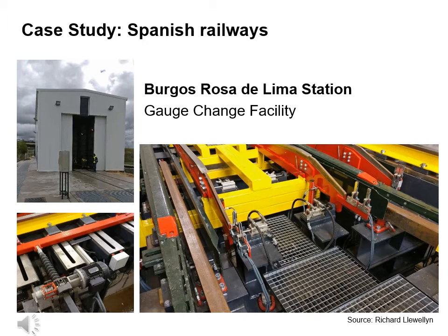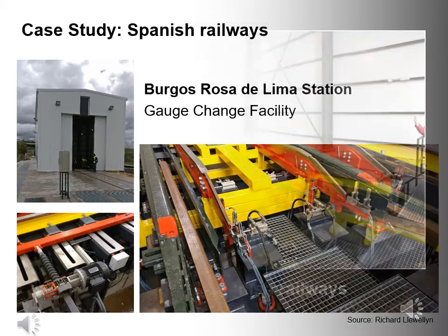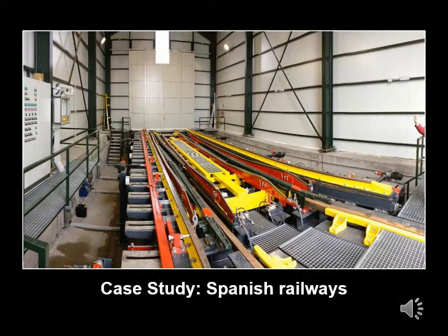At the Burgos Rosa de Lima station, they have a gauge change facility. In this building, the rolling stock will pass through and will be automatically changed to the alternative gauge. In the YouTube playlist for this unit, you will find a short video showing how this facility operates.